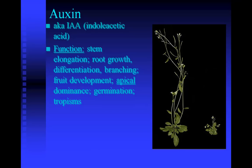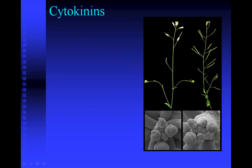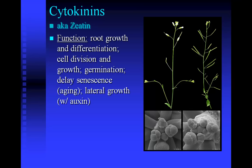The second hormone discovered was cytokinins, which is also a family of hormones, also known as zeatin — because the first cytokinin was discovered in pea plants and the genus name for pea plants is Zea. In this photograph, the plant on the left is the normal plant and the plant on the right has been treated with extra cytokinins. Both plants are the same height, but the plant on the right has more lateral, or side, branches. So cytokinins are known for stimulating lateral growth. For a plant to be healthy, you need a balance between auxins and cytokinins — you want the plant tall enough to get sunlight but not so tall it falls over, and you want enough lateral branches and leaves to capture sunlight and do enough photosynthesis.